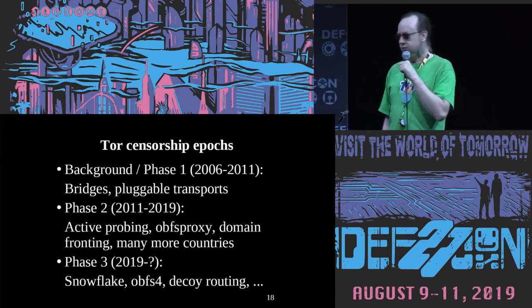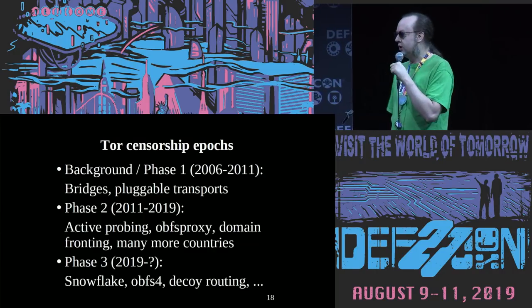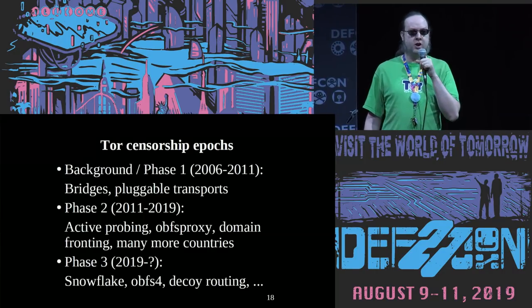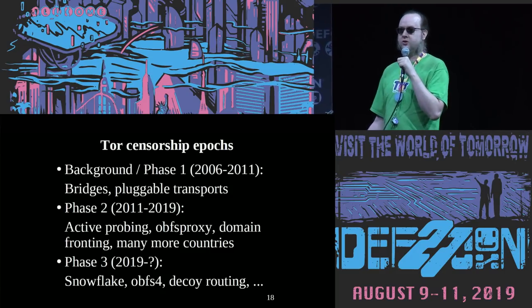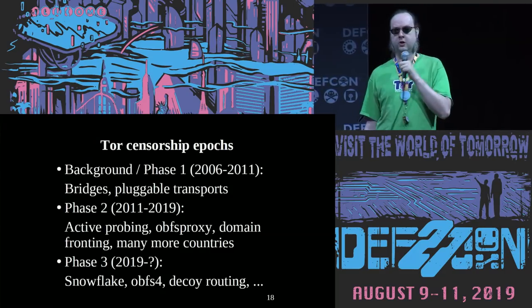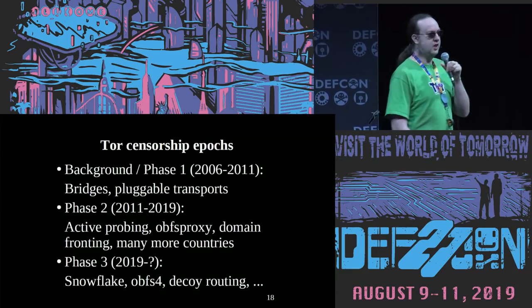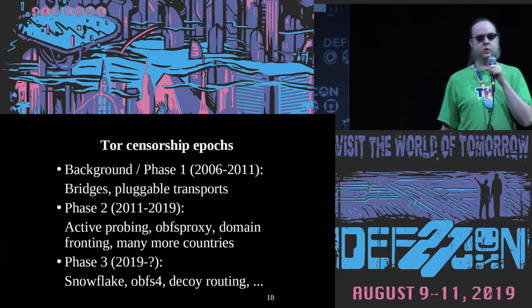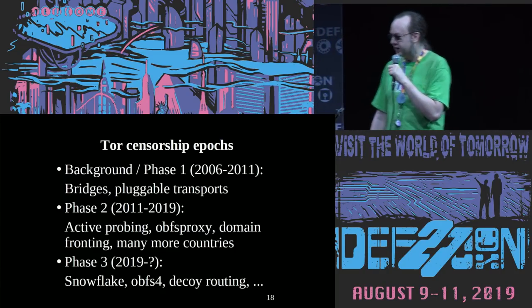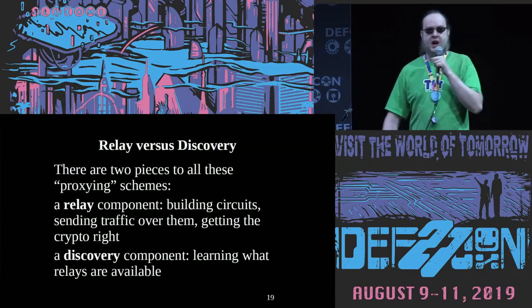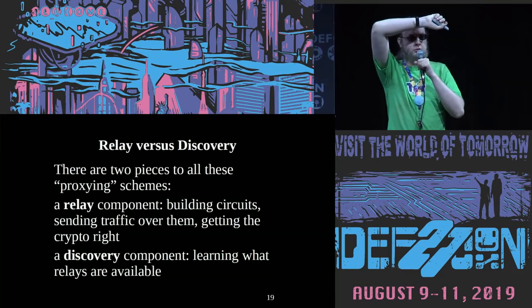So what am I going to talk about today? I've got three different pieces. The first one is the background of the censorship side of things. The second one is what's happened in the past couple of years in terms of new attacks from governments that are trying to censor Tor. And then the third one is a bunch of new tools that we're working on that will hopefully move us forward in the arms race. How many people here know about Tor bridges and pluggable transports and phrases like that? I see far fewer hands than before — okay, awesome.